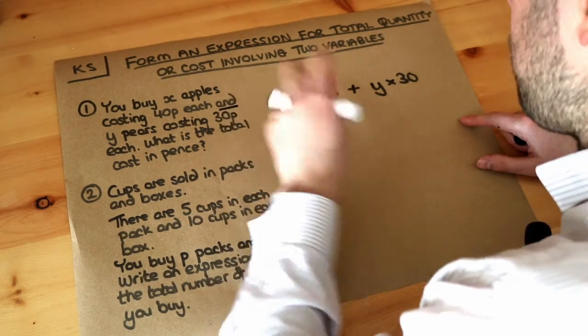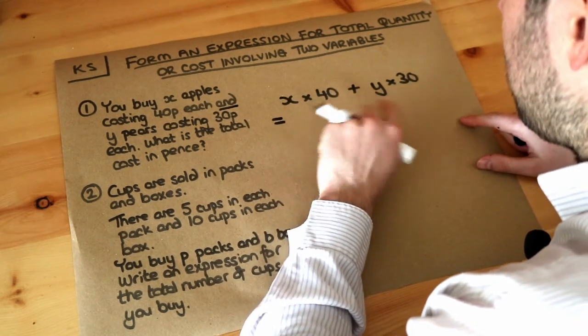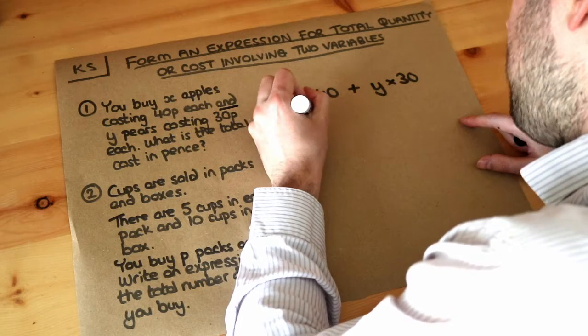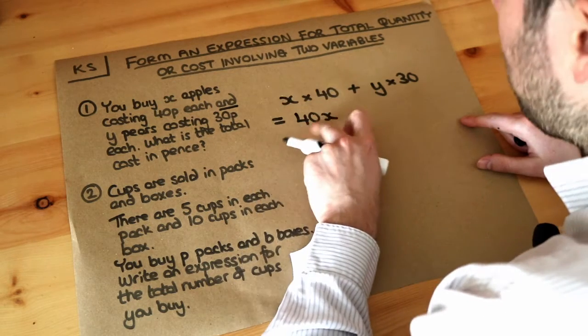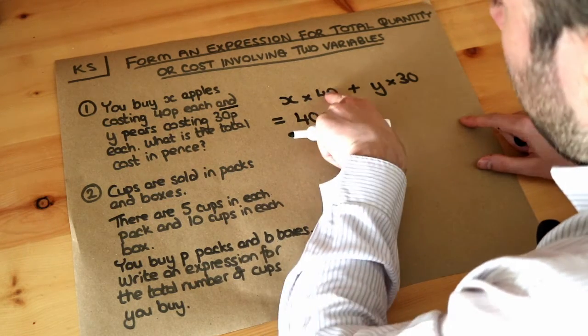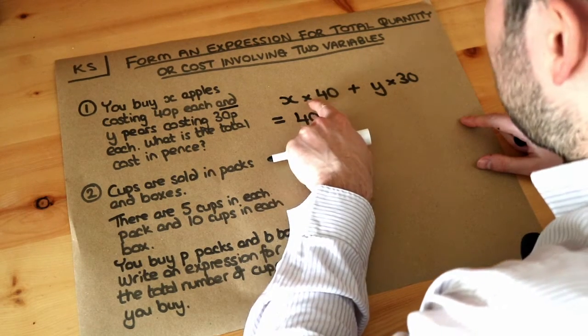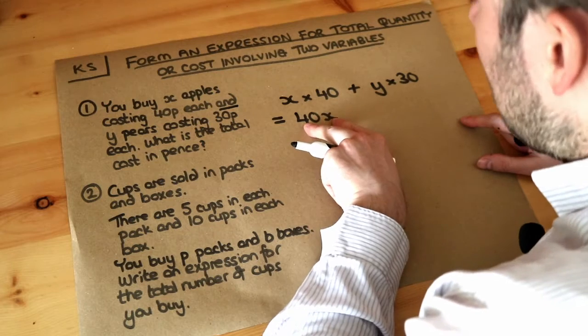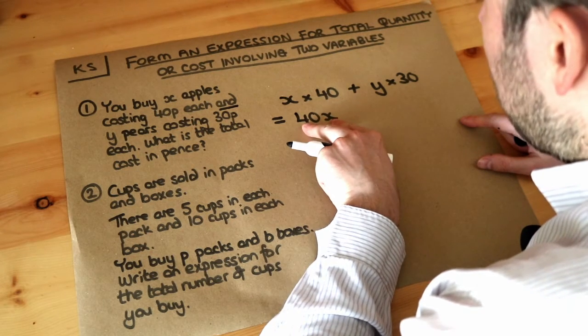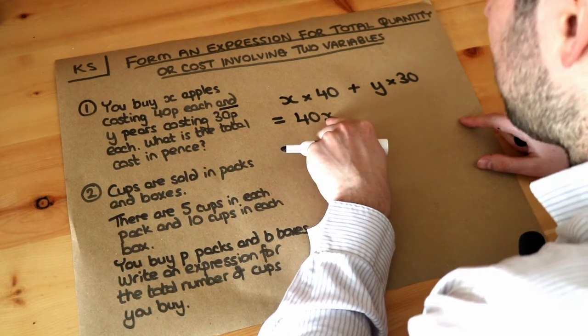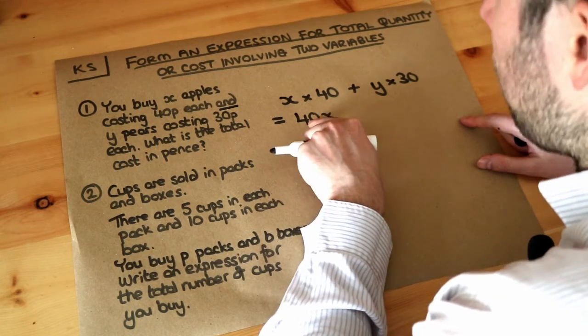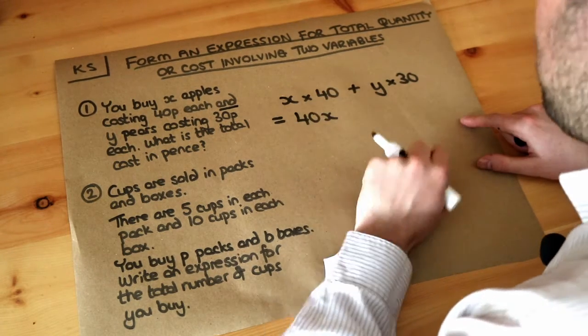Now we can simplify this because when you do x times 40, we could write this as 40x. 40x just means 40 lots of x, and that's what we got, we got 40 lots of x. In general in algebra we try to avoid these times symbols and we write things next to each other to mean that we're multiplying them together. So 40 next to x just means 40 lots of x, 40 times x, which is exactly what we've got here.